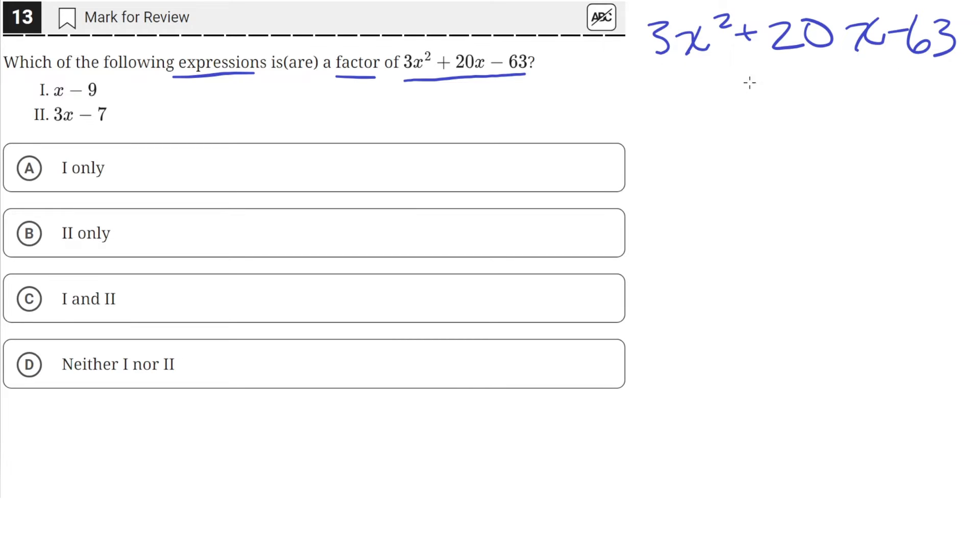So to factor this by grouping, what we need to do is split this 20 into two separate terms that when added together equal 20, so that gives the expression the same, but when multiplied equal 3 times negative 63.